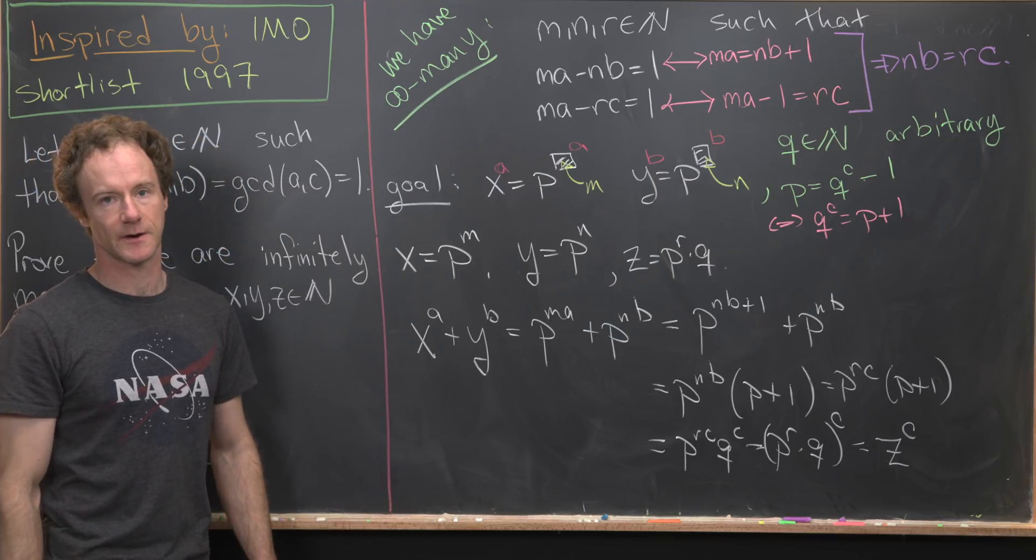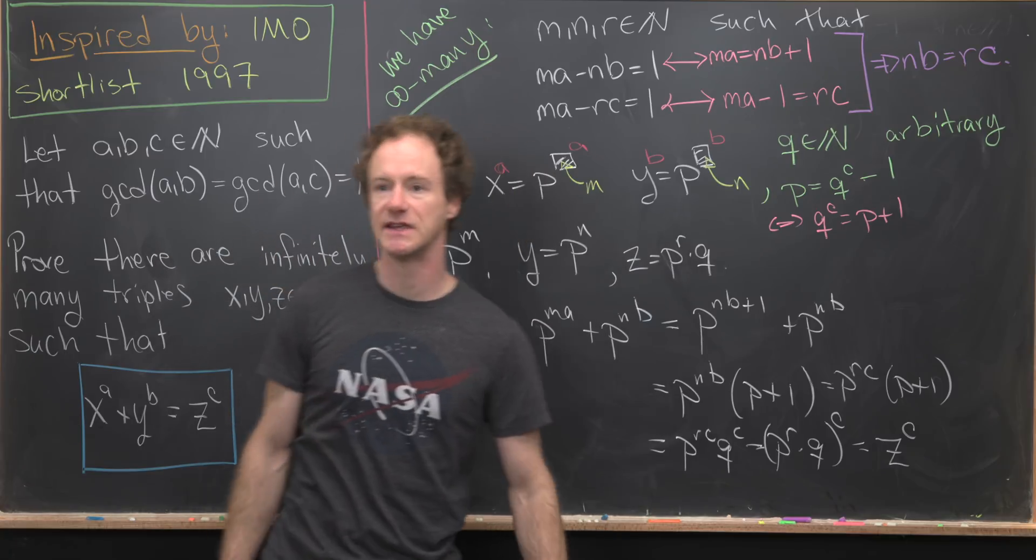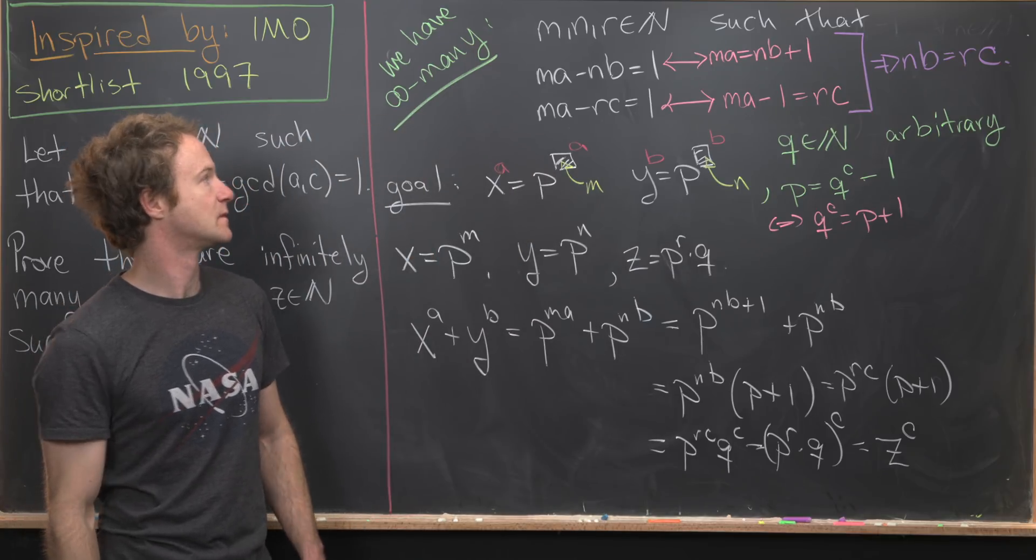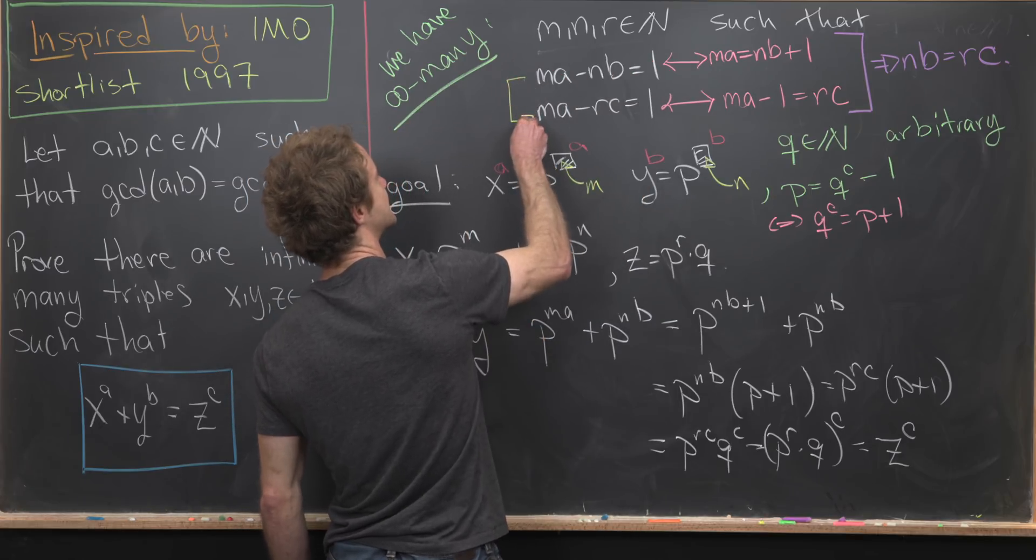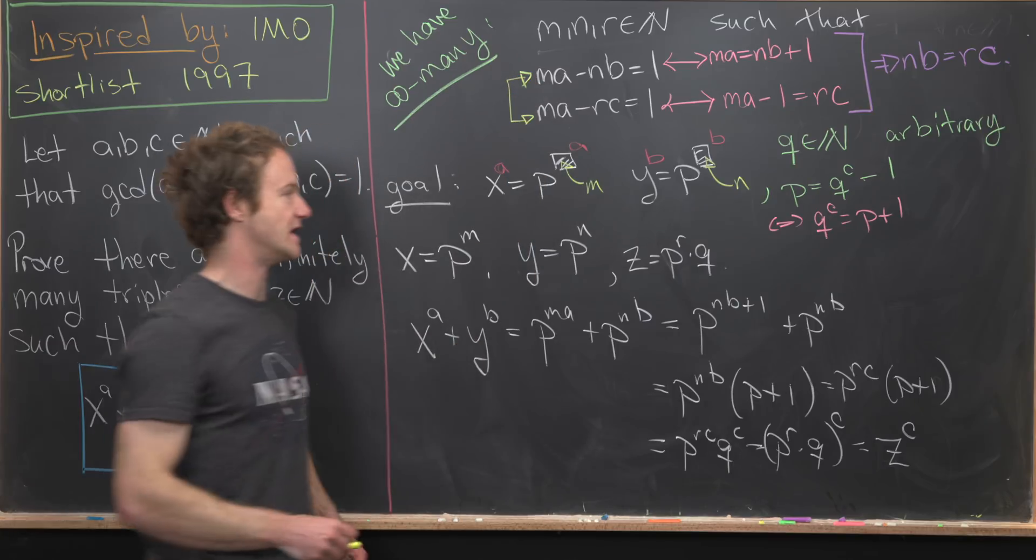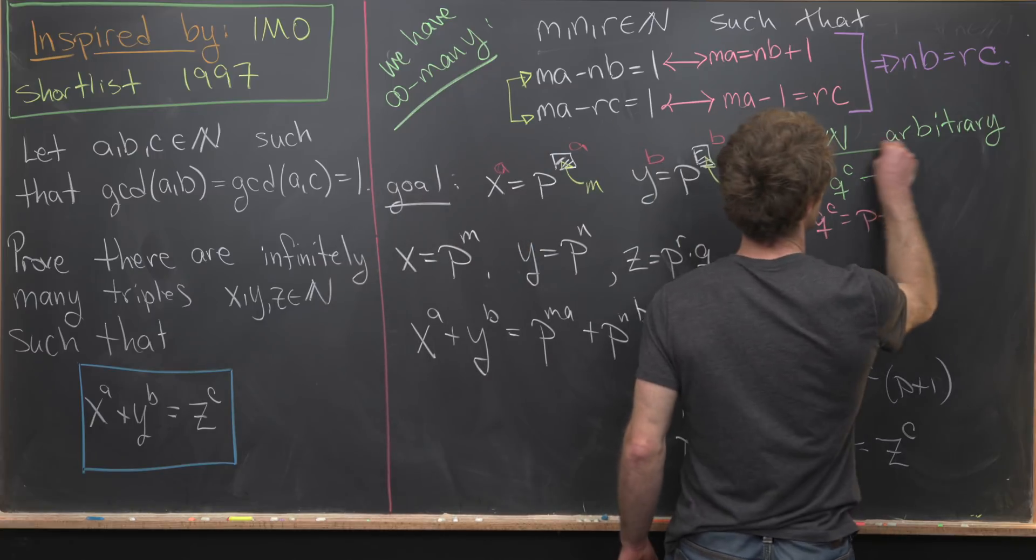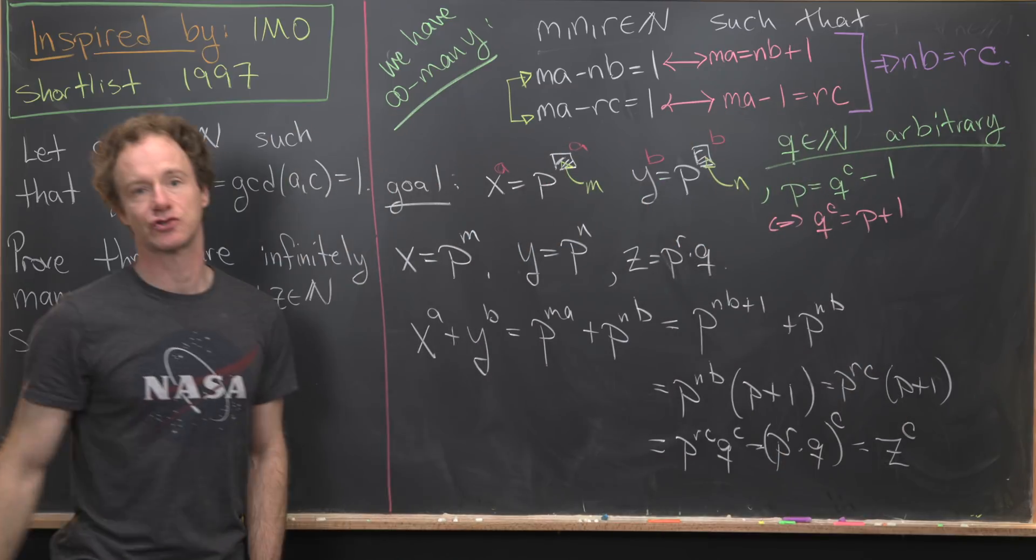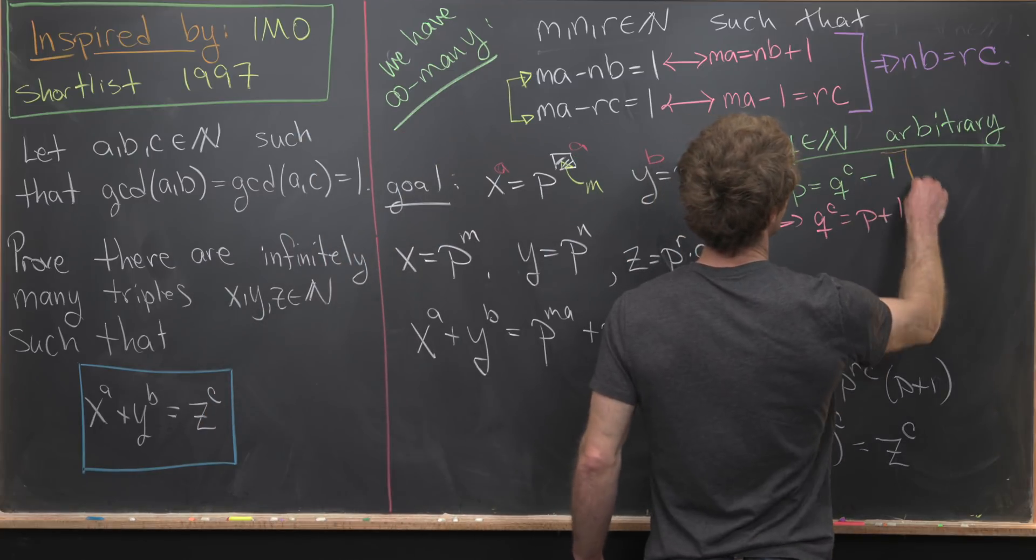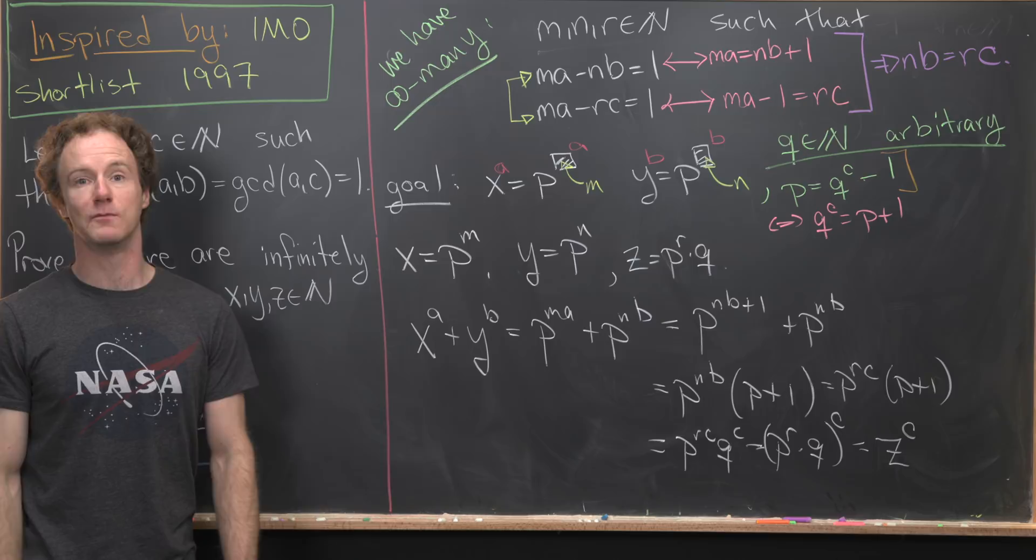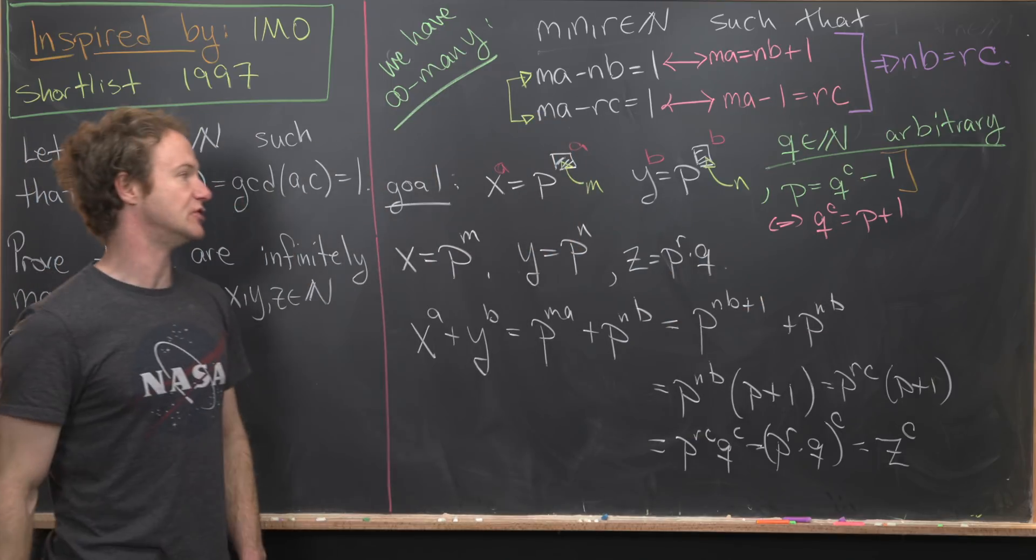So let's reiterate what we did right here. Using the fact that A and B and A and C are relatively prime, we found infinitely many triples M, N, and R satisfying these two equations. And then next, we took an arbitrary Q, which was a natural number, and then we set P equal to the C power of Q minus one. That makes P plus one equal to Q to the C.